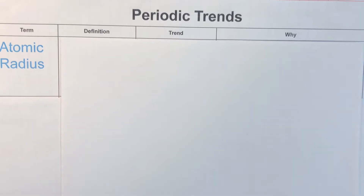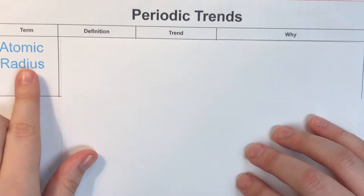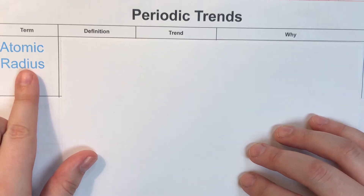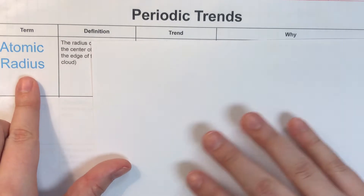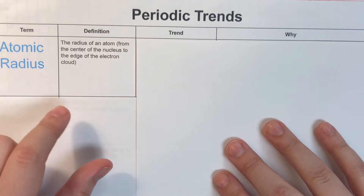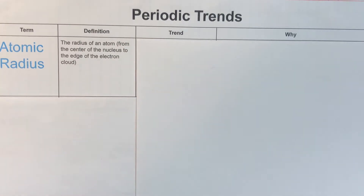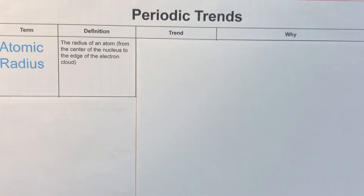The first row we have is going to be atomic radius. Atomic radius literally just means exactly what you think it means — it's going to be the radius of an atom. The radius means that we're measuring from the center of that sphere to the outermost edge of our electron cloud, so we're measuring from the center of our nucleus to that edge of our electron cloud.